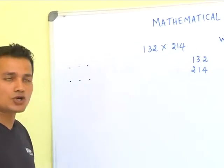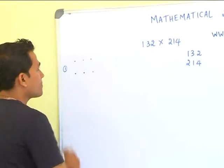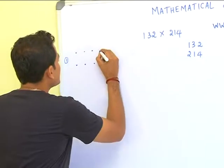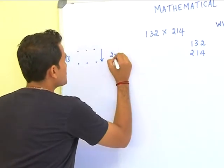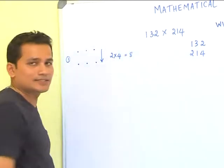Let me explain the 5 steps. I will write the number as dot blocks. So, the first step would be to multiply the unit digits. So you have 2 and 4. 2 into 4 is 8.